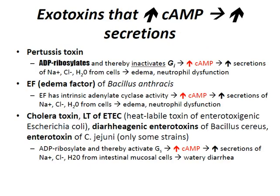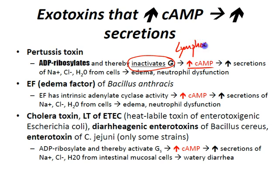Let's talk about exotoxins that increase cyclic AMP, which leads to increased secretions. The pertussis toxin ADP ribosylates and inactivates Gi-coupled proteins, therefore leading to increased cyclic AMP, therefore leading to increased secretions of sodium chloride and water from cells, leading to edema and neutrophil dysfunction. Note that the pertussis toxin also causes significant lymphocytosis by inhibiting chemokine receptors.